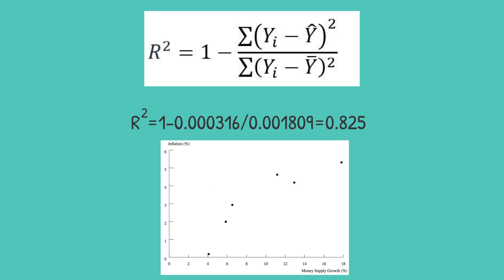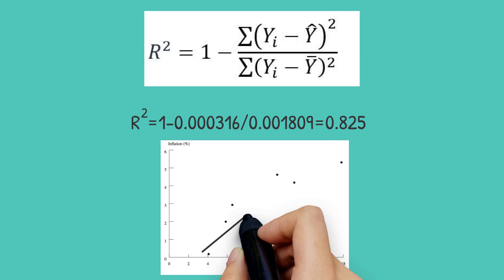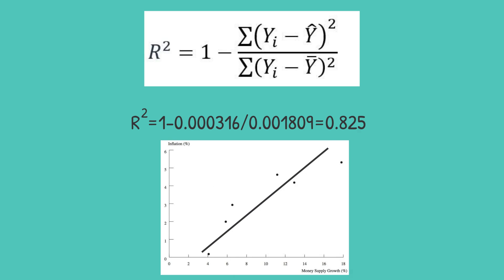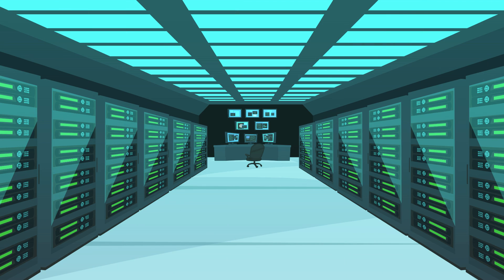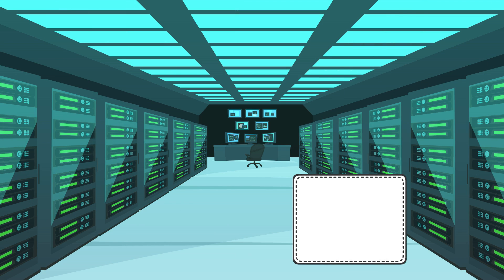So in this regression, the long-term rate of money supply growth explains approximately 82.5% of variation in the long-term rate of inflation across countries between 1980 and 2012. In the next video, we will learn how we can perform a regression analysis using Python.